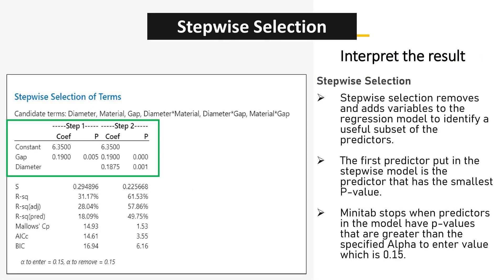Stepwise Selection removes and adds variables to the regression model to identify a useful subset of the predictors. The first predictor put in the stepwise model is the predictor that has the smallest p-value. Minitab stops when predictors in the model have p-values that are greater than the specified alpha to enter value, which is 0.15.